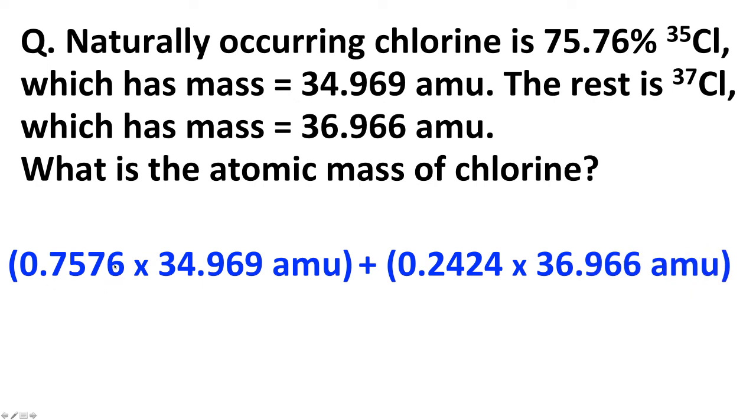Well, this is a fairly straightforward calculation. If you think about it, 75.76% or 0.7576 of the chlorine has a mass of 34.969. So if we multiply those together, we get the mass due to that part of the naturally occurring chlorine. The rest of it, 100% minus 75.76% is 24.24%. So 0.2424 times the mass of the other isotope, 36.966. This gives us the weighted average of these two isotopes. That works out to be the 35.45 AMU. That is the atomic mass shown on the periodic table. So that's where that number comes from.